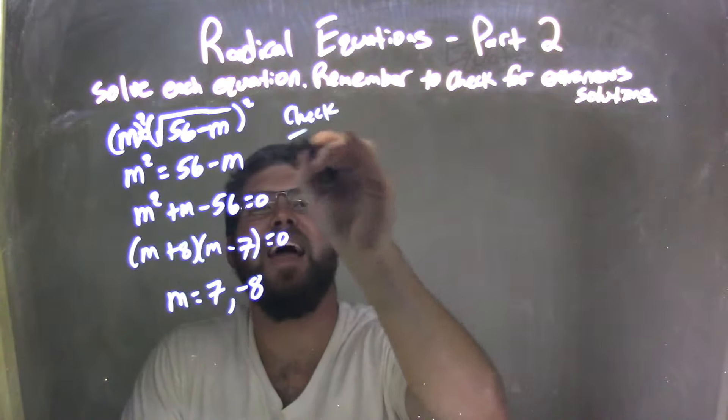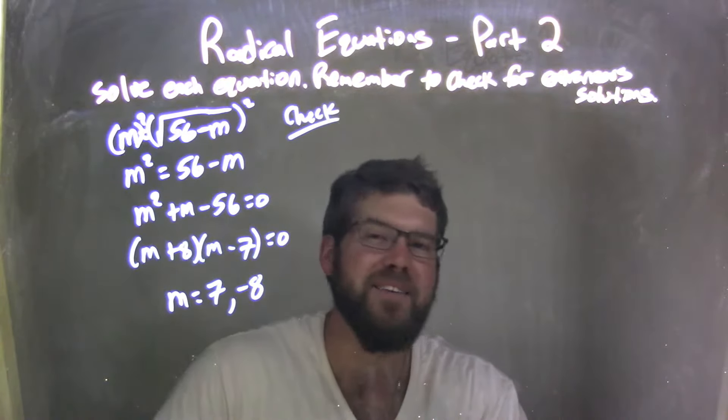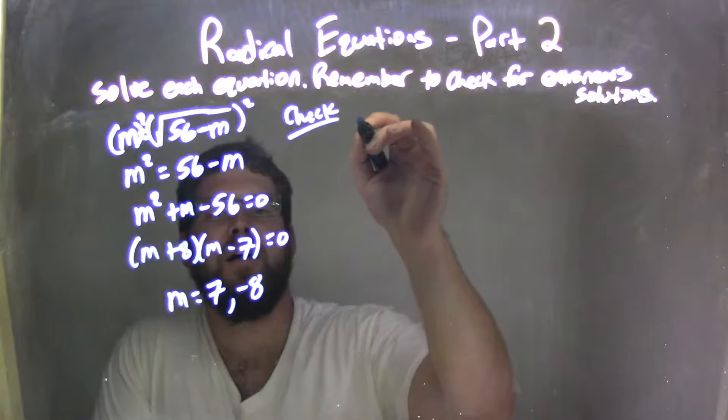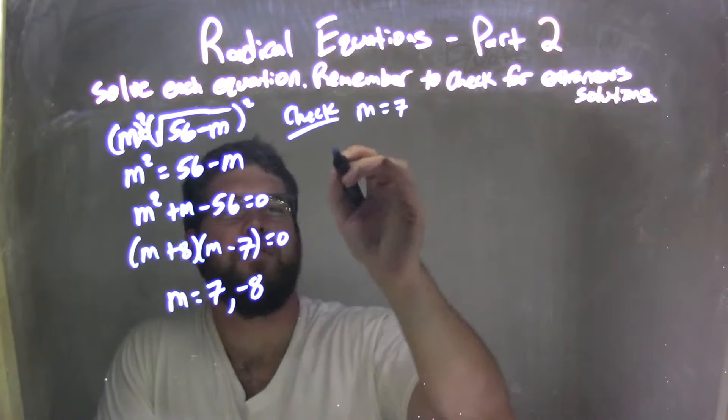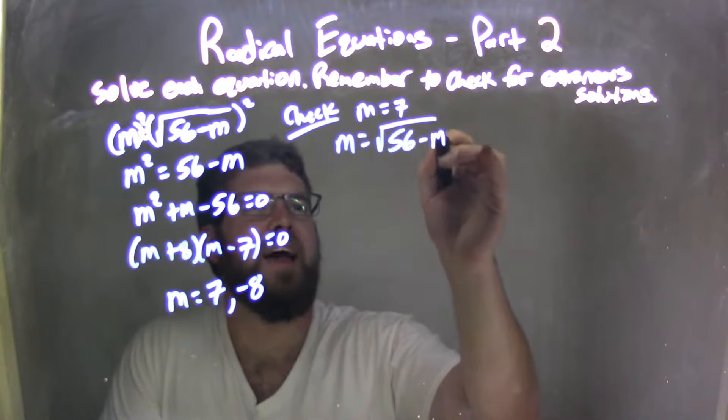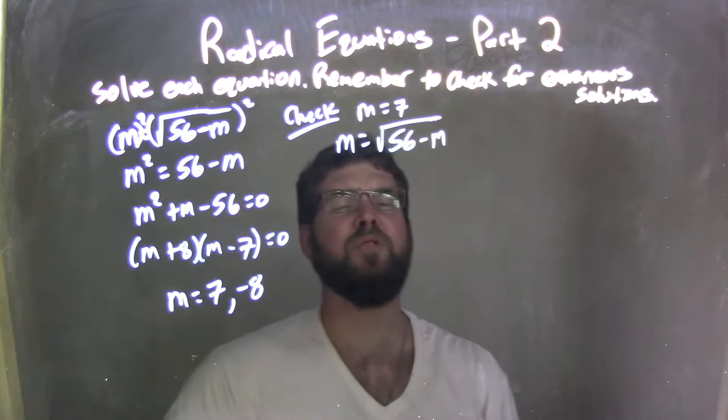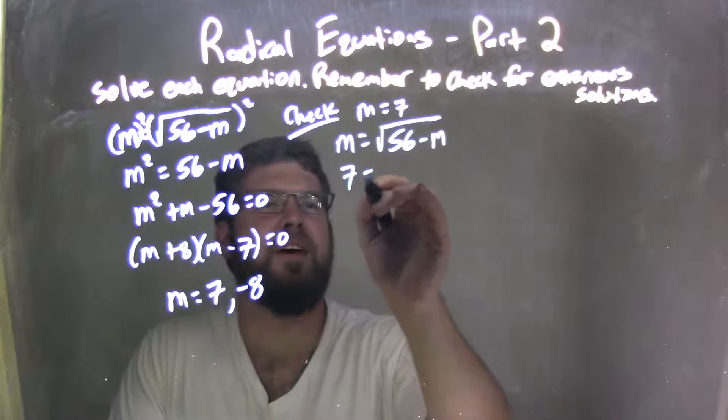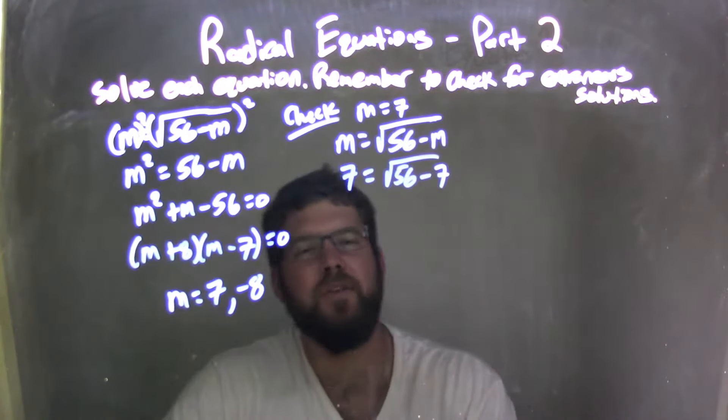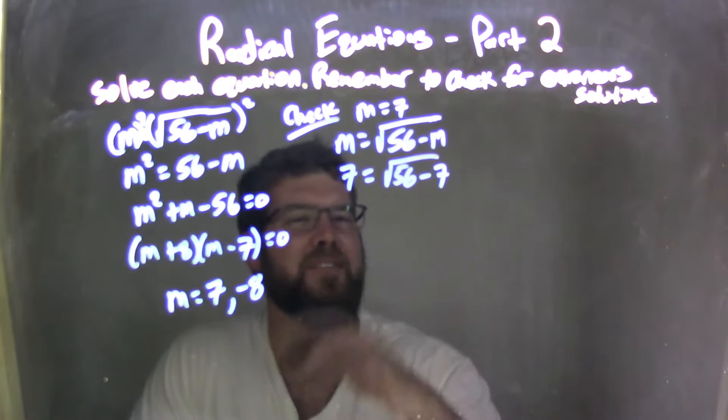I don't like extraneous ones. Let's do m equals 7 first. m equals the square root of 56 minus m. Let's go plug that 7 for both of our m's. 7 equals square root of 56 minus 7. What does it come out to be? That's 49.